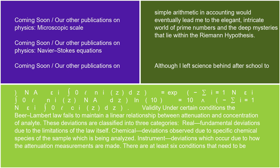Validity. Under certain conditions, the Beer-Lambert Law fails to maintain a linear relationship between attenuation and concentration of analyte. These deviations are classified into three categories: Real (fundamental) deviations, due to the limitations of the law itself; Chemical deviations, observed due to specific chemical species of the sample being analyzed; and Instrument deviations, which occur due to how the attenuation measurements are made.